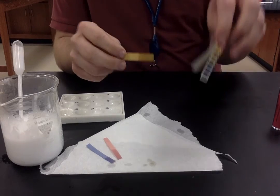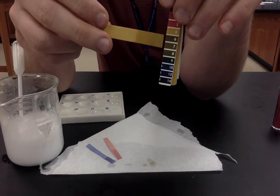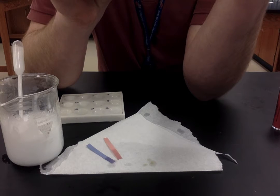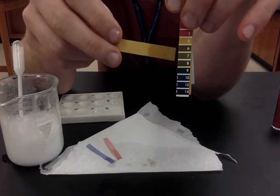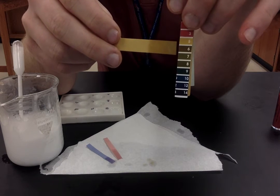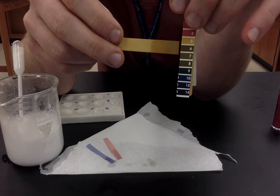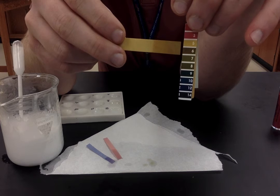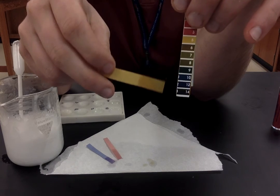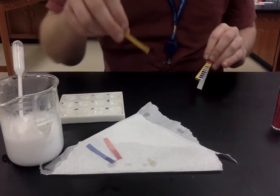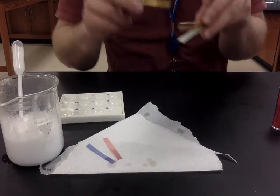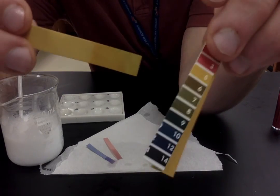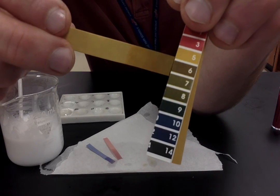All right, so next up we have our pH paper here. You can kind of see it falls sort of right around a six. Actually, looks like that might be the closest, so we'll say that the hand lotion is a six. Go ahead and write that down, and it's like a brownish color.